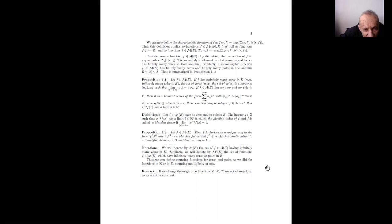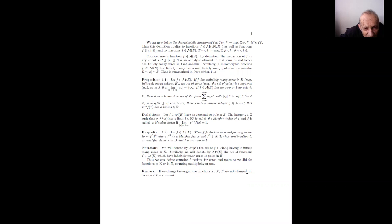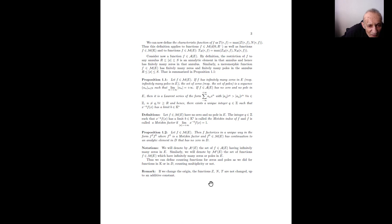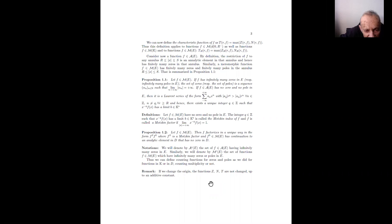Notation: we denote by Ac(E) the set of functions in E having infinitely many zeros in E, and similarly by Mc(E) the set of functions on E which have infinitely many zeros or infinitely many poles — at least one or the other. We can then define counting functions for zeros and poles as we did for functions in k and D. Remark: if we change the origin, the functions Z and T are not changed up to an additive constant.